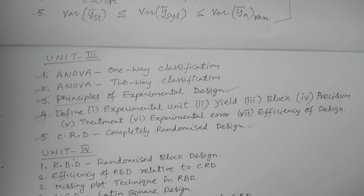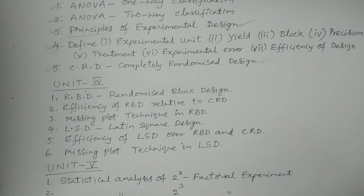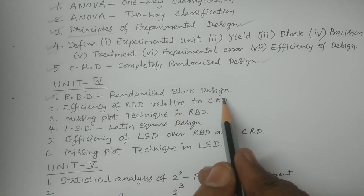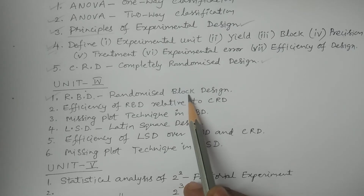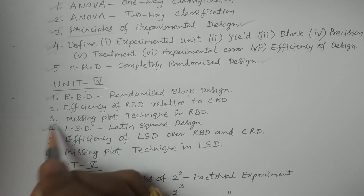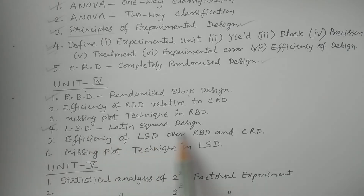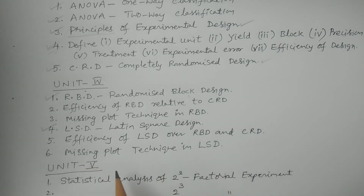Unit 4 covers two important designs of experiments: Randomized Block Design and Latin Square Design. The first question is on Randomized Block Design — what is the definition, what is the statistical analysis, advantages, disadvantages, and layout. The next question is on missing plot techniques for RBD and LSD.